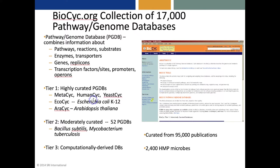We divide BioCyc into three tiers to describe their quality levels. Tier 1 are the very highly curated databases, which in some cases have undergone two person-decades of curation. The Tier 2 databases are moderately curated, and there are 50 of these. Tier 3 databases are all the rest — they are computationally derived.